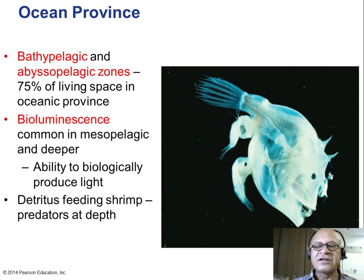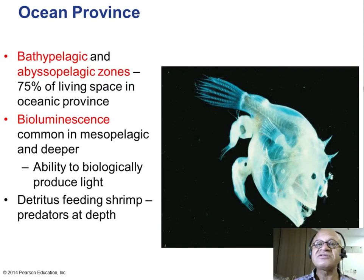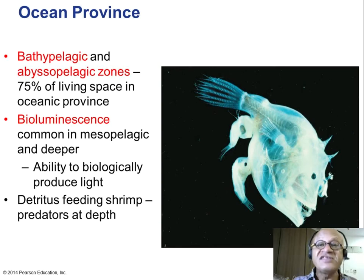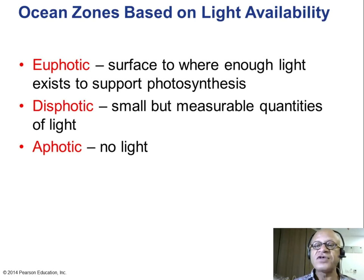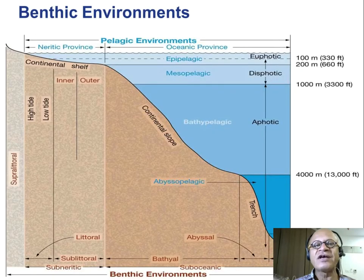These detritus-feeding shrimp are attached to this fish here. Detritus is dead organic matter, as opposed to feces, which is the poop of the fish. We already talked about the euphotic zone, close to the surface where there's enough light to support photosynthesis. Dysphotic has small but measurable quantities of light. Aphotic has no light.